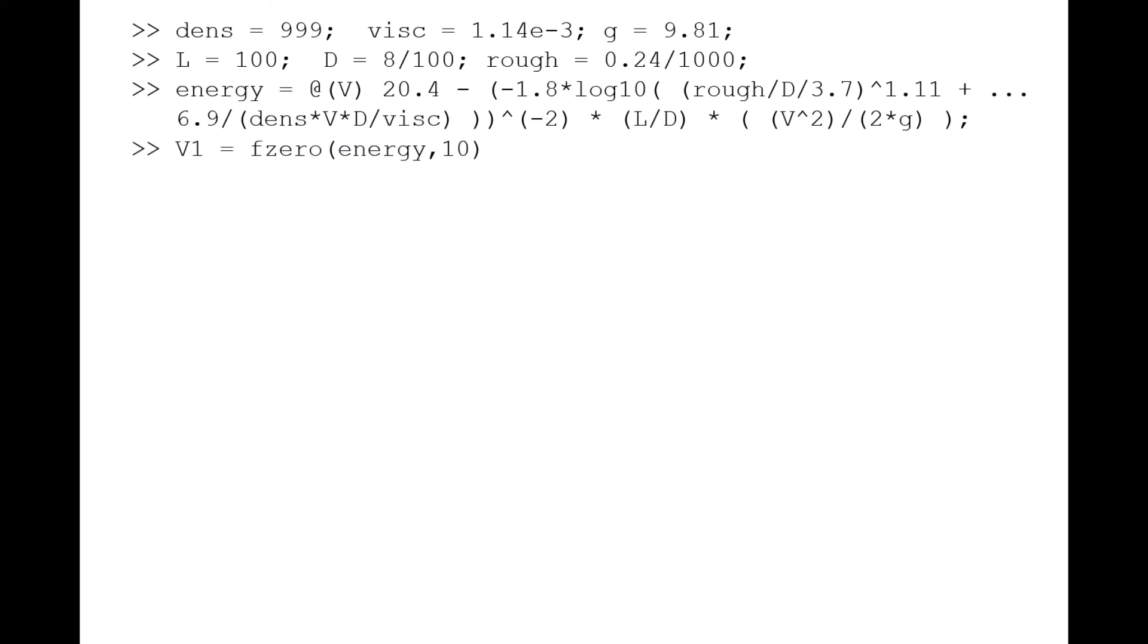Now we can use the fzero function by writing v1 equals fzero, begin parentheses, energy, comma, 10, end parentheses. The first argument in fzero is the function handle energy, and the second argument in the function, the number 10, is our initial guess for the solution for the speed. Now it's okay to be wrong about the initial guess. MATLAB just needs an initial value to start its numerical method. When fzero is finished, it will store the resulting value in the variable v1. So after hitting the enter key, fzero quickly returns 3.4620 and assigns this value to v1. This is the value for v1 that will make the energy equation approximately zero.